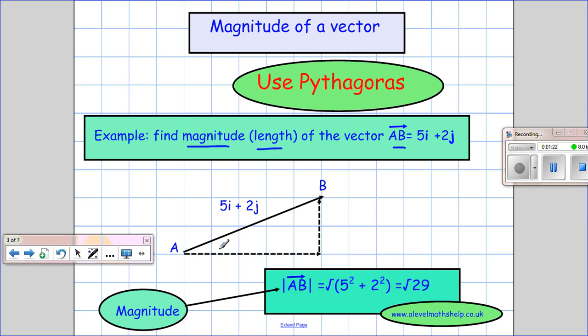So if I have this vector AB, I start at A and I go to B, and it's given by 5i + 2j, that means I've gone five units in the direction of the x-axis and two units in the direction of the y-axis. And you can see I've just got a nice little right-angled triangle, so I can find the length of this line AB.